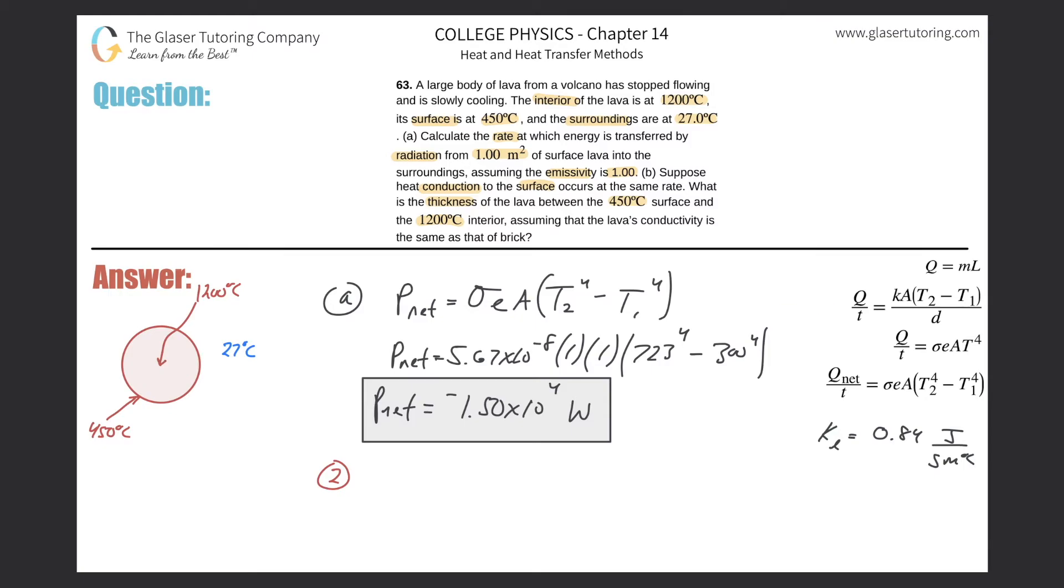So here's the conduction formula: the power is going to be equal to the conductivity constant multiplied by the square area, multiplied by the change in temperature. You can leave this formula—since those temperatures are not raised to any power—you can leave that in Celsius if you like, divided by d, which is the thickness.